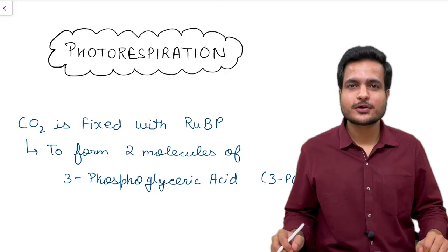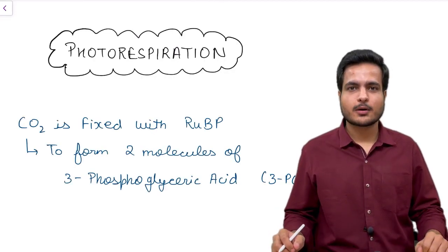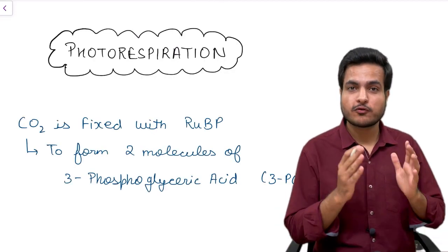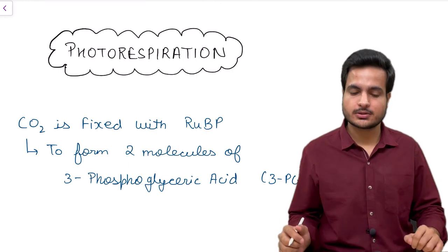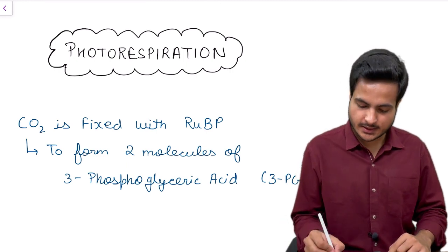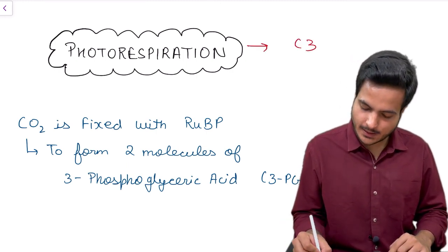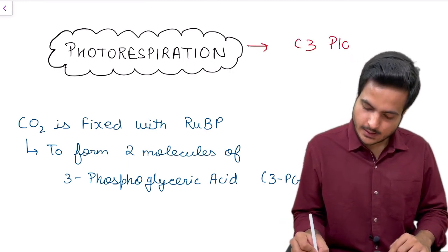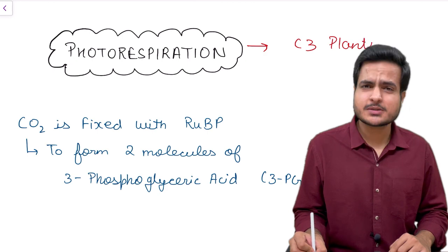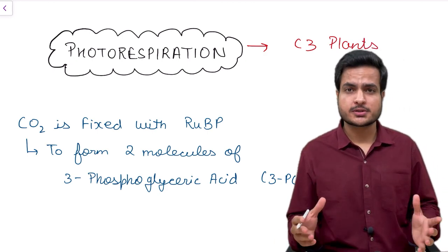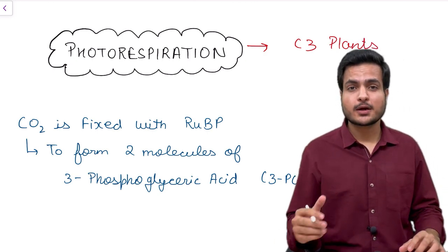Hello everyone. In this video we will be discussing about a process whose name is photorespiration. This occurs only in C3 plants and this process is called a wasteful process, so let us find out why it is called wasteful.